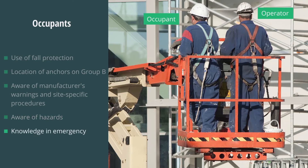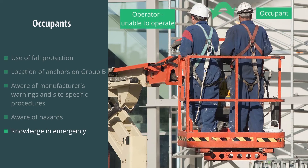At least one of the occupants must be provided with the knowledge for operating the controls in an emergency, such as emergency shutdown, and for lowering procedures for the device if the operator is unable.